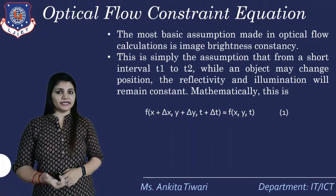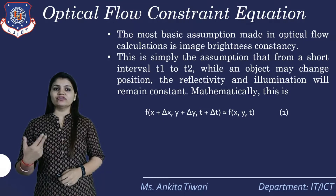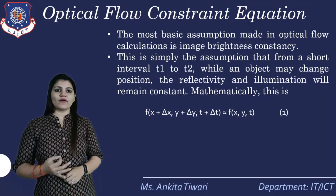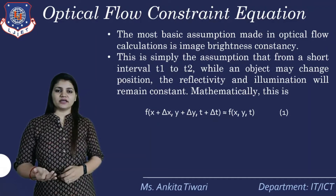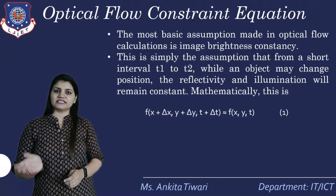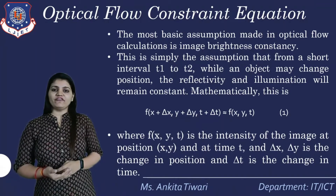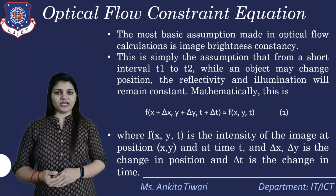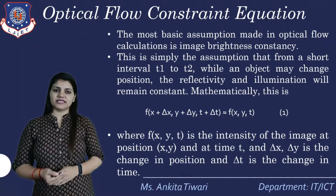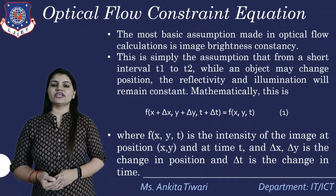So f of (x + Δx, y + Δy, t + Δt) — the three respective parameters are x, y, and t. With respect to x, we change motion by Δx; same with Δy and Δt. Here f(x, y, t) is the intensity of the image at position x and y at time t. Δx and Δy are the change in position, and Δt is the change in time.